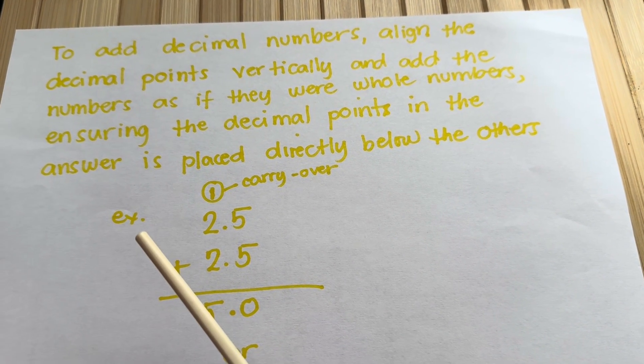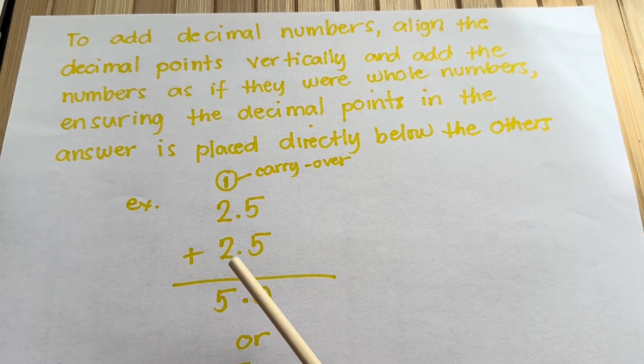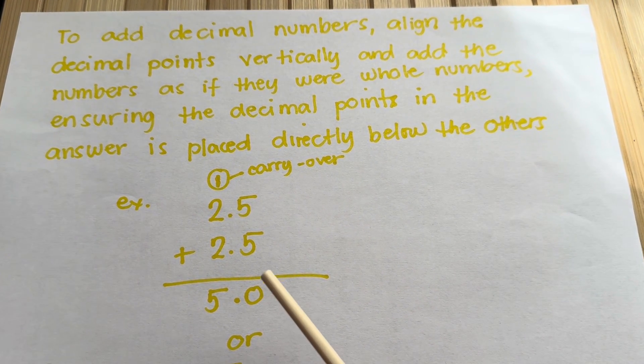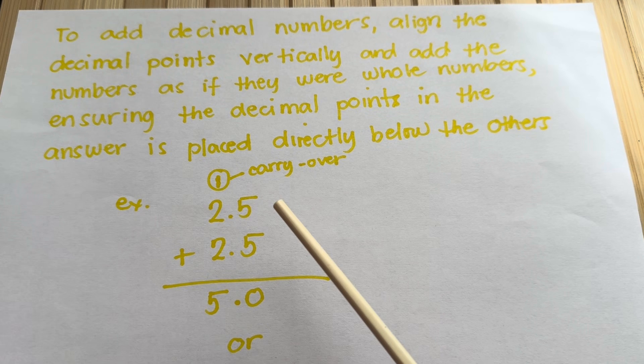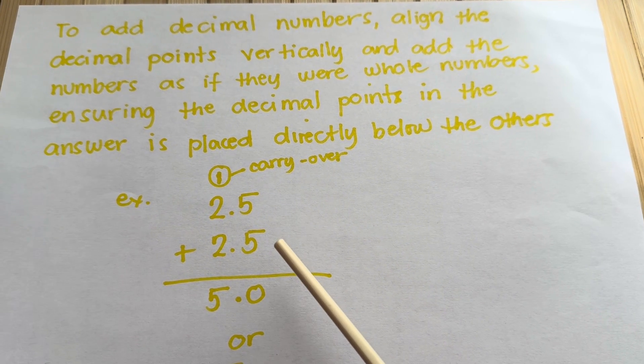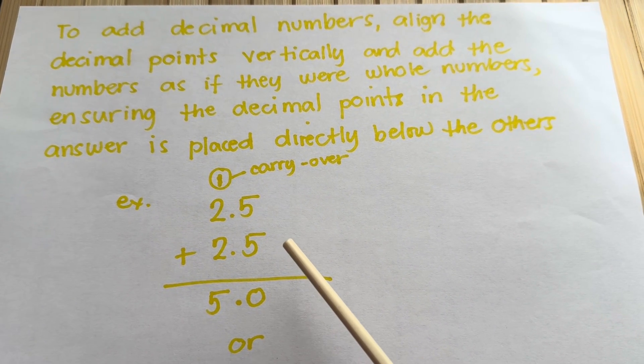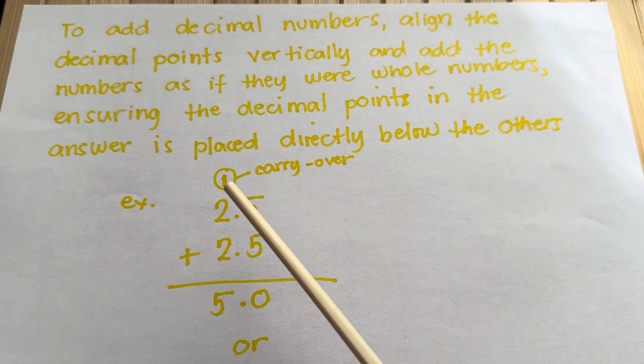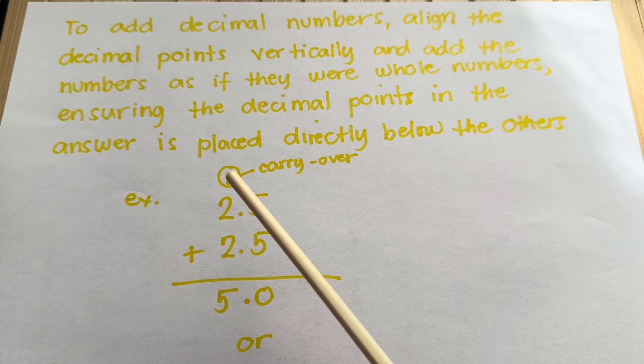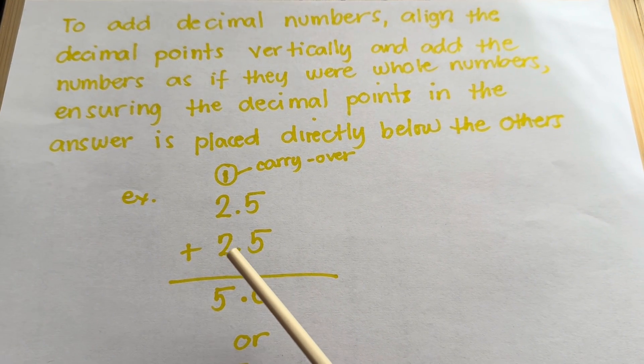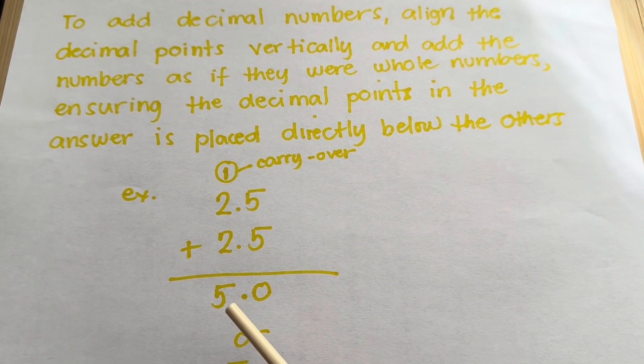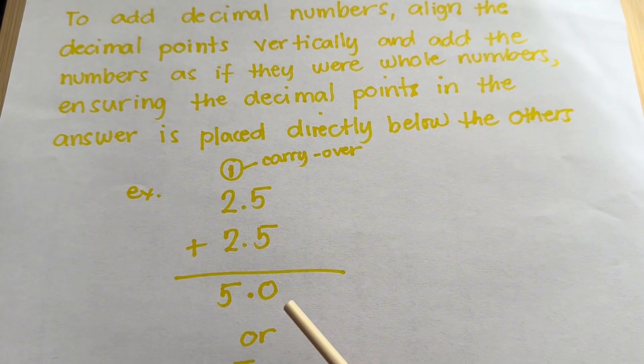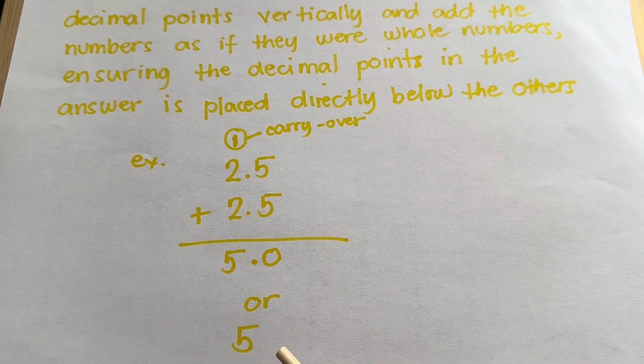Example, 2.5 plus 2.5 is equals to 5.0, wherein we add the first column 0.5 plus 0.5 is equals to 1.0. So we put the zero and carry over 1 in the next column. So 1 plus 2 plus 2 is equals to 5. Therefore, 2.5 plus 2.5 is equals to 5.0 or 5.